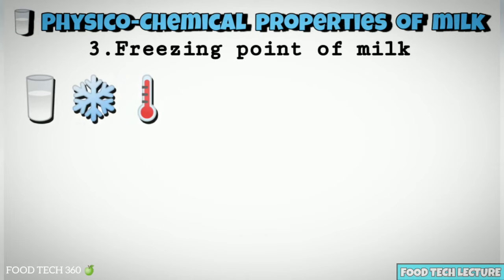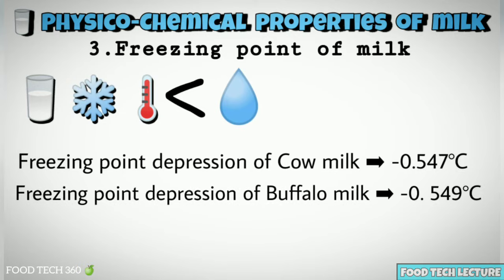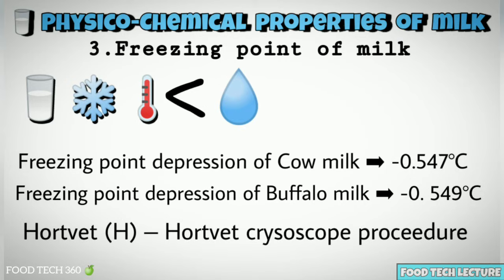Freezing point of milk. Milk freezes at a temperature slightly lower than that of water due to the presence of soluble lactose, salts, etc. The average freezing point depression of cow milk is minus 0.547°C and buffalo milk is minus 0.549°C. The freezing point of milk is normally used to detect adulteration of milk with water, which is generally expressed using the Hortvet water cryoscope procedure.